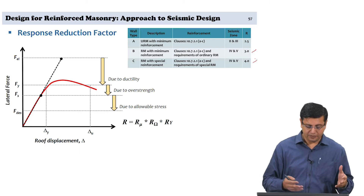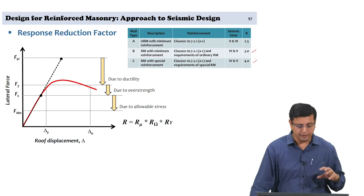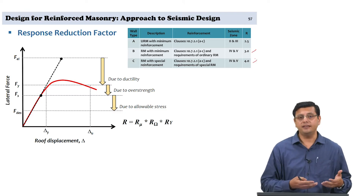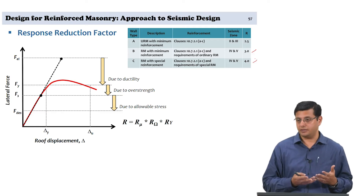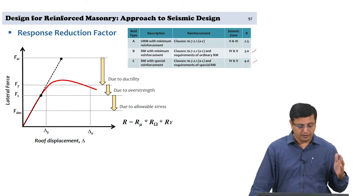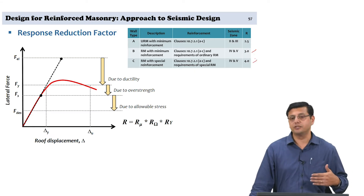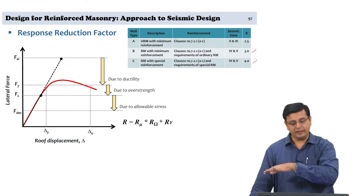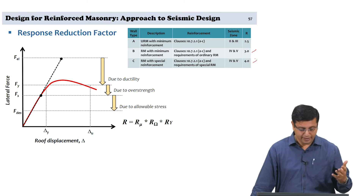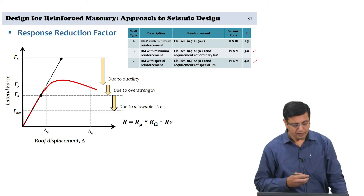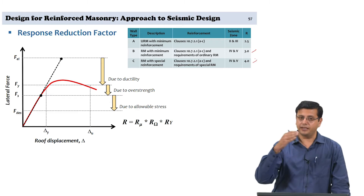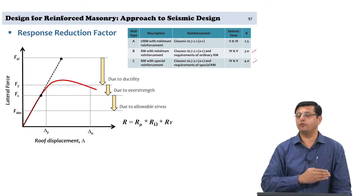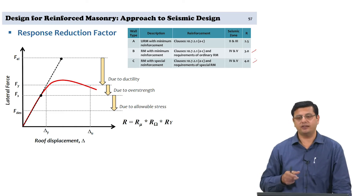The R factor is a combination of effects considered in overall structural behavior. Looking at this graph, the red line is the overall lateral force response of the structure. On the y-axis we have lateral force and on the x-axis we have roof displacement — a control node at the top of the structure. We observe how this structure behaves as lateral force increases until failure by any mechanism, reaching ultimate behavior. The red line represents the actual behavior, and certain important points on this force-displacement curve give us the basis for the definition of the R factor.